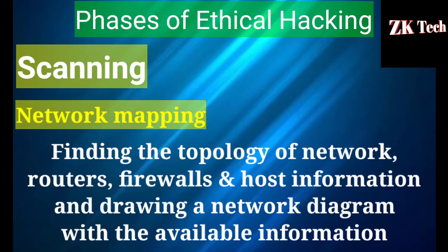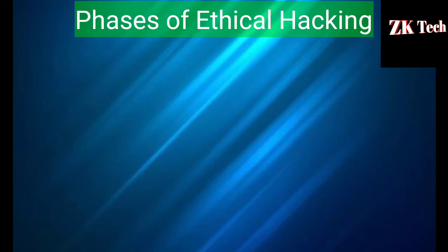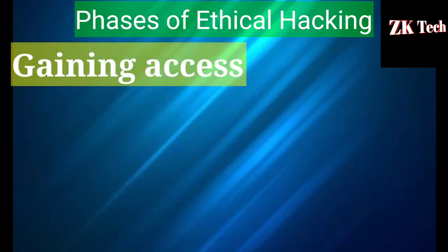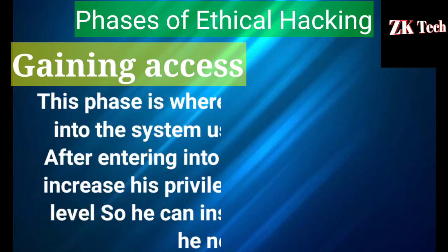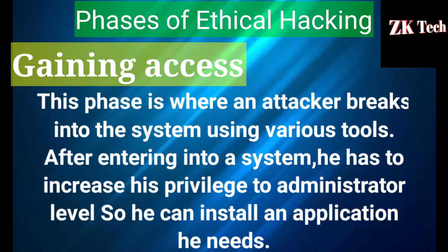The third phase of ethical hacking is gaining access. This is the phase where an attacker breaks into the computer system using various tools or methods. After entering into a system, he has to increase his privileges to the administrative level so he can install any application that he needs.